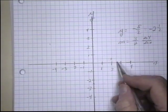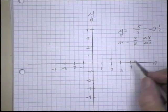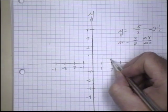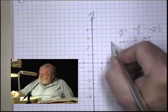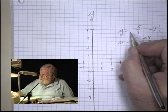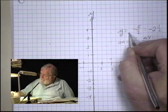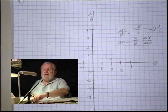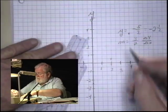And I could continue and generate another point by going up three units. Here's 1, 2, 3, and over 2, 1, 2. This would be my second point. And I can draw a line connecting those points.